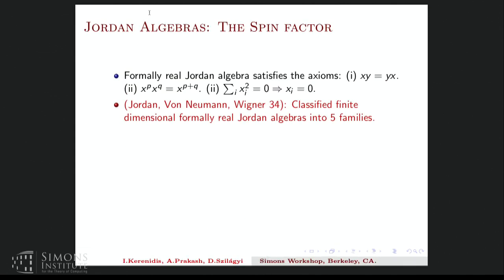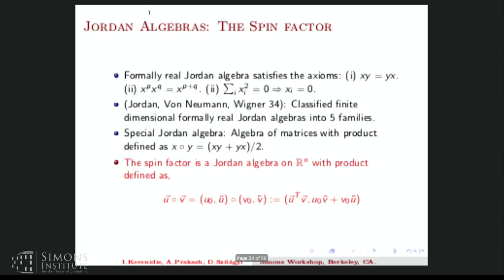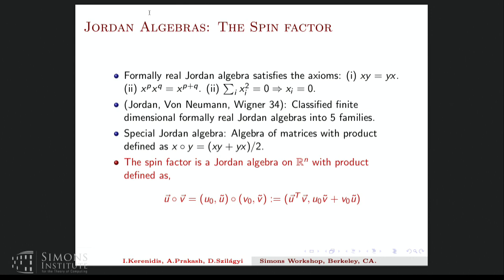So Jordan, von Neumann, and Wigner classified all finite dimensional, formally real Jordan algebras into five families. So three of these families came from matrix algebras. So one of the most important examples of Jordan algebras is matrix algebra with a product defined as XY plus YX by two. But there were two other families, and one of them was the spin factor, which has this rather strange Jordan product. So Jordan product here is defined in this equation.